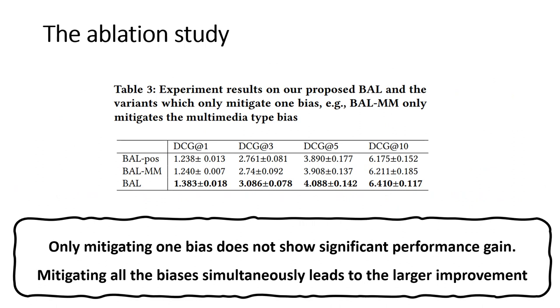In our ablation study, we know two features are sources of bias. When we only mitigate one bias, there are no significant performance gains. But mitigating all biases simultaneously leads to larger performance gains.